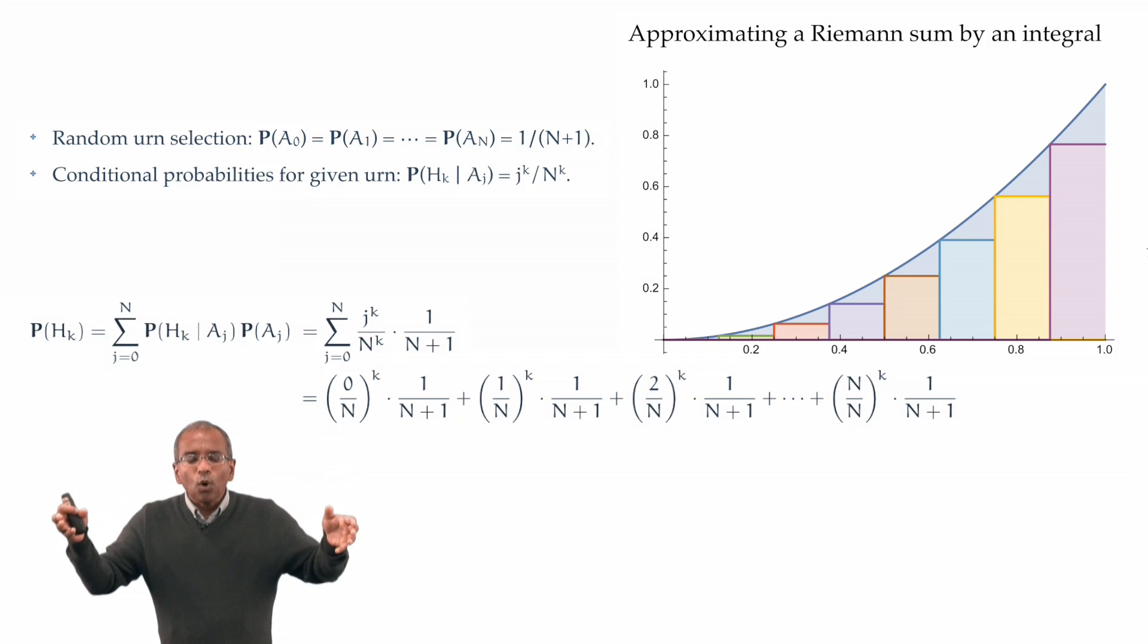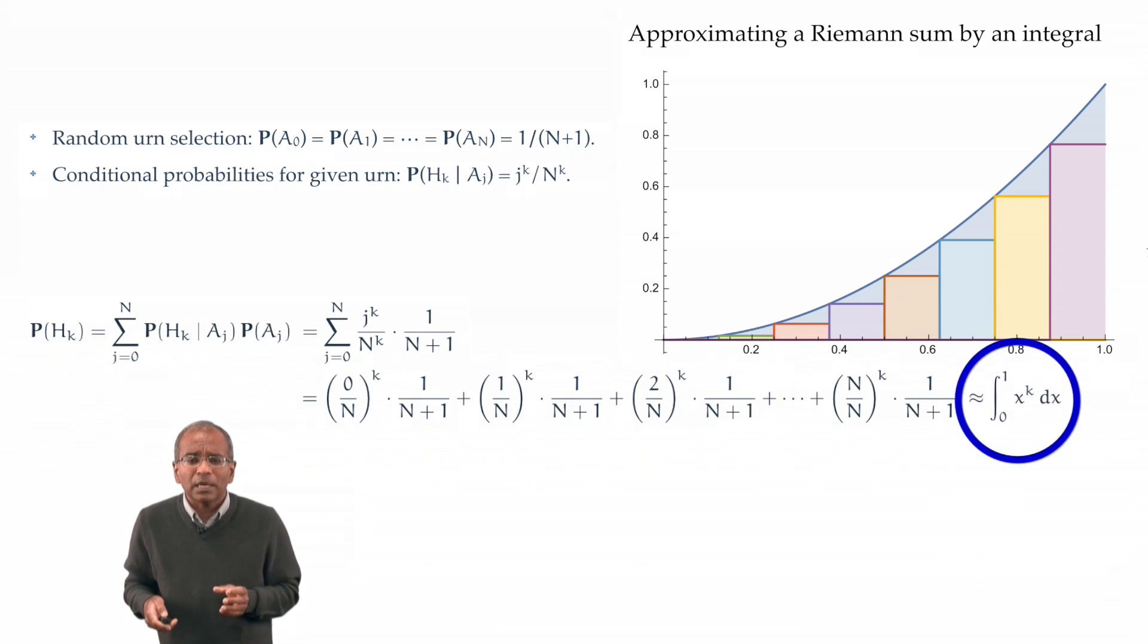When you sum over all these terms, we're summing areas of a sequence of rectangles. As n becomes large, these rectangles get closer and closer to the area under the curve. We begin to recognize a Riemann sum as an approximation to an ordinary garden variety Riemann integral. And this integral is particularly simple and beguiling. If we now make the natural step and say n is large, then the sum in question is indeed an approximation to the integral from 0 to 1 of x to the power of k.